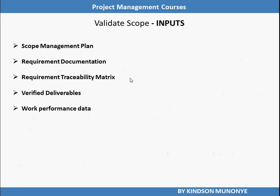Let's now discuss some of these inputs. One of the inputs to Validate Scope is the Scope Management Plan. The Scope Management Plan defines how the scope will be managed, how the scope will be controlled and defined. Why do we need the Requirements Documentation for Validate Scope? Because this documentation lists all the project, product, and other types of requirements for the project and product along with the acceptance criteria. For the product of the project to be accepted, there must be criteria to be measured against, and this information is contained in the Requirements Documentation. The Requirements Traceability Matrix is necessary because it links requirements to their origin and tracks them throughout the project lifecycle.